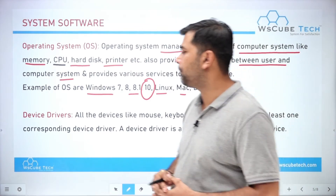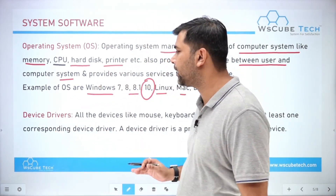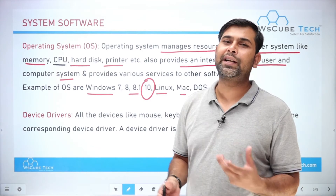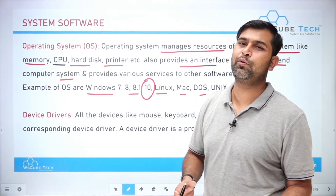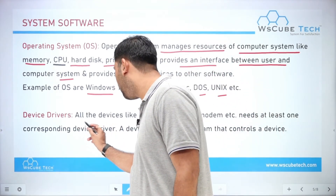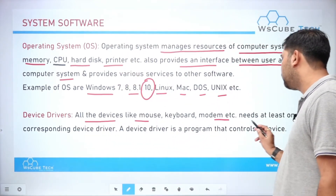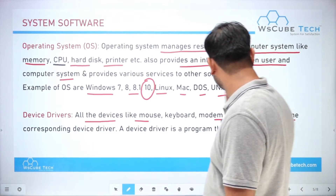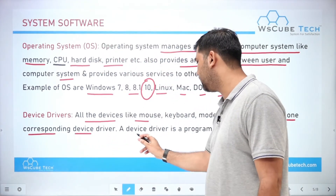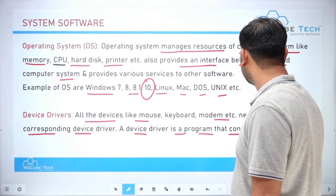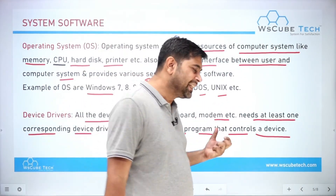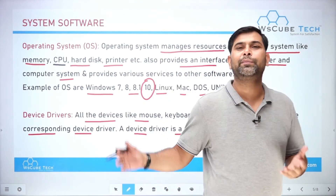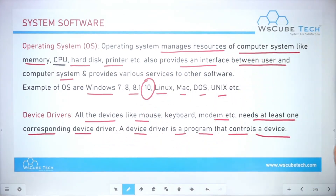Next, we have device drivers. A device driver is a special type of software required to run hardware. All devices like mouse, keyboard, modem, etc. need at least one corresponding device driver. A device driver is a program that controls a device. If you want the definitions, you can take a screenshot.